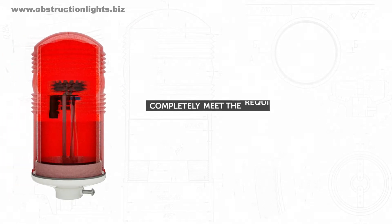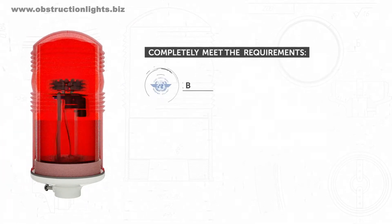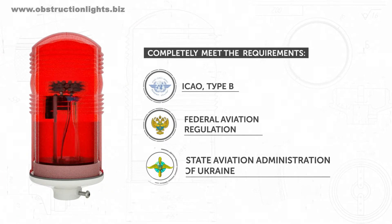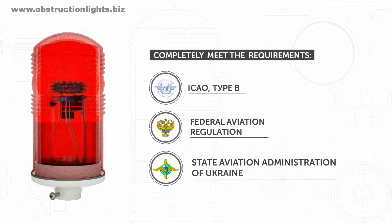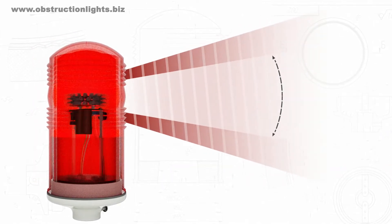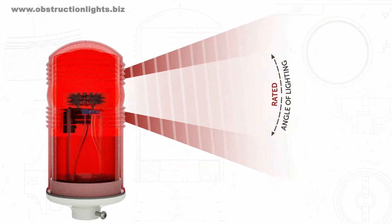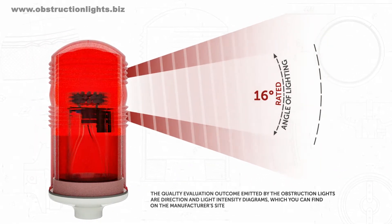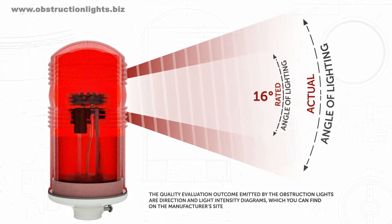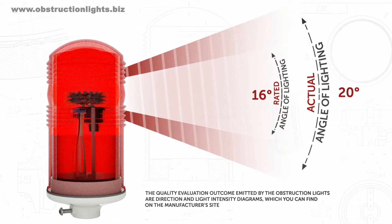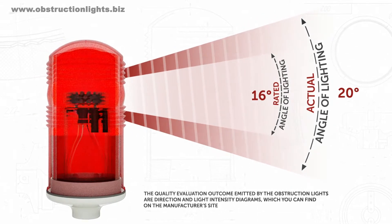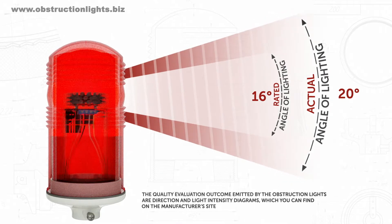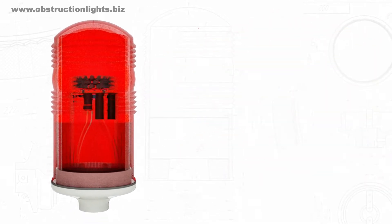ZOM48 LED Aviation Obstruction Lights are obstruction lights of low intensity, B type. Index B means that the rated intensity value of the emitted light signal — red radiation — at the angles of negative 6 to plus 10 degrees in relation to the horizon, is equal to no less than 32.5 candela.